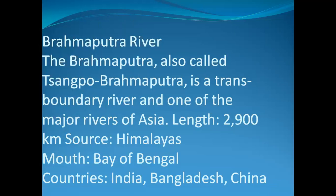The Brahmaputra river, also called Tsangpo-Brahmaputra, is a trans-boundary river and one of the major rivers of Asia. It is trans-boundary because it flows through China, India and Bangladesh. The length of the Brahmaputra river is approximately 2,900 km. Its source is in the Himalayas and its mouth is the Bay of Bengal.